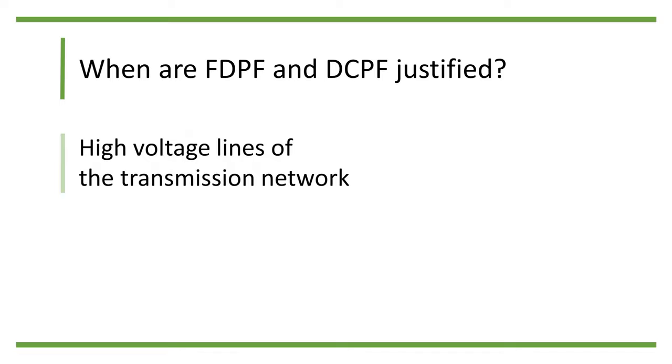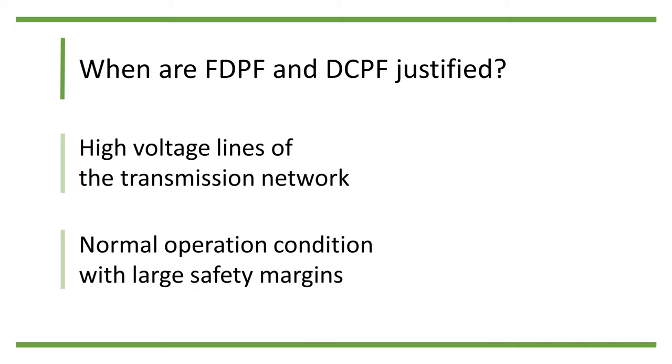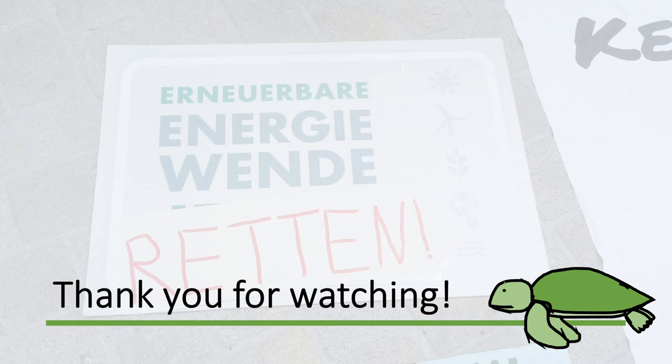So FDPF and DCPF are justified when we are modeling the high voltage lines of the transmission network, so the resistance will be very small, and also when we are modeling the normal operational condition with large safety margins, so that the real and reactive power are small compared with the allowed volume.